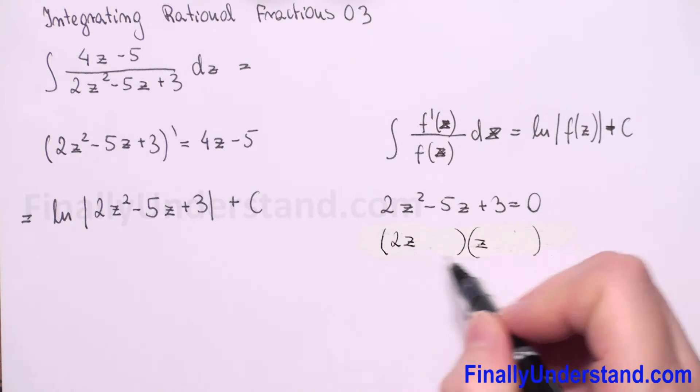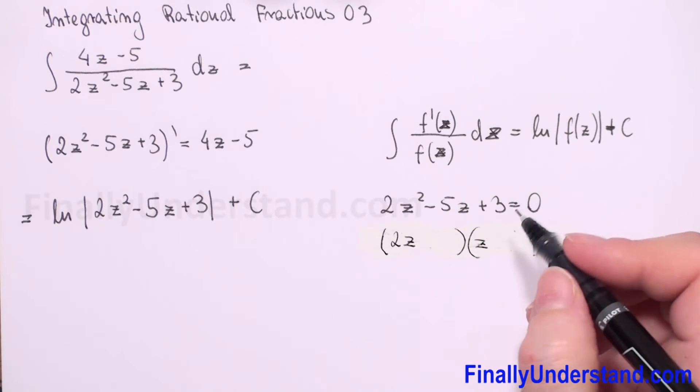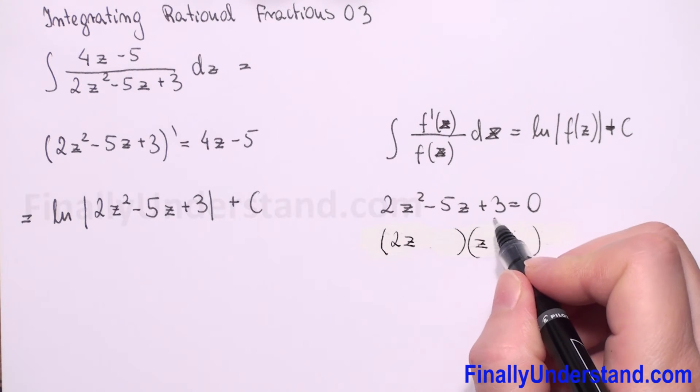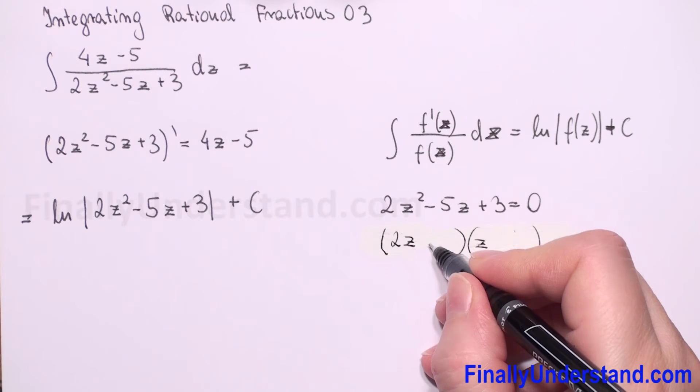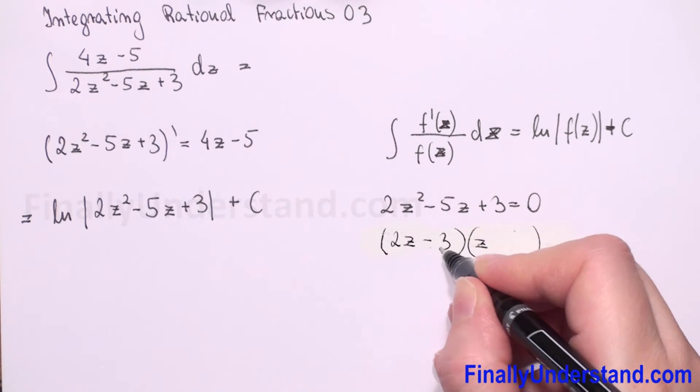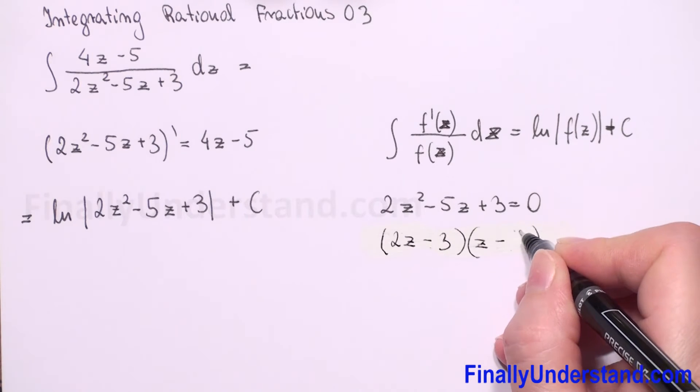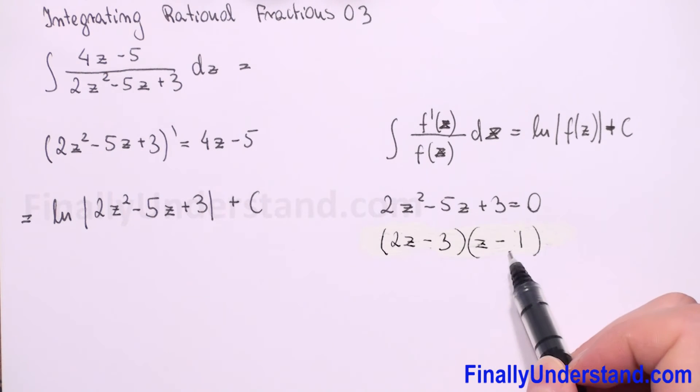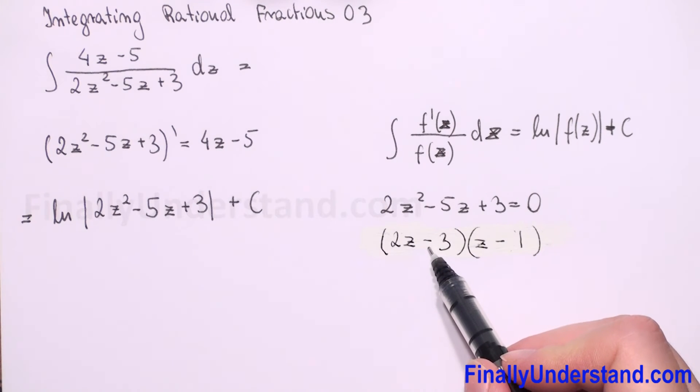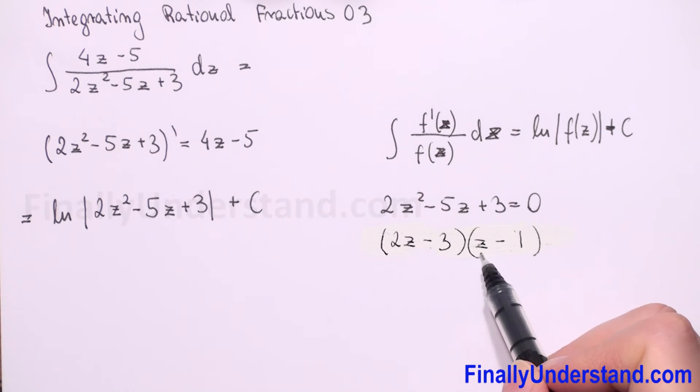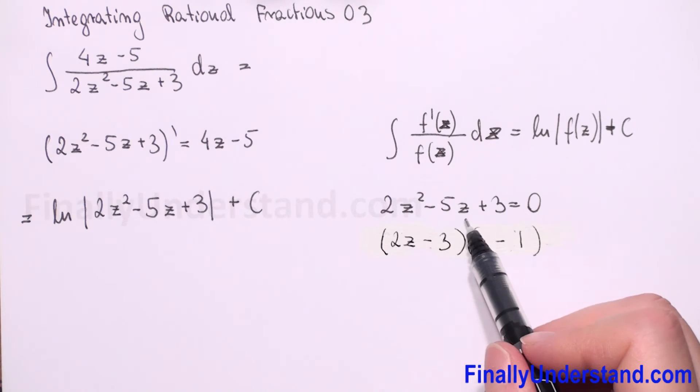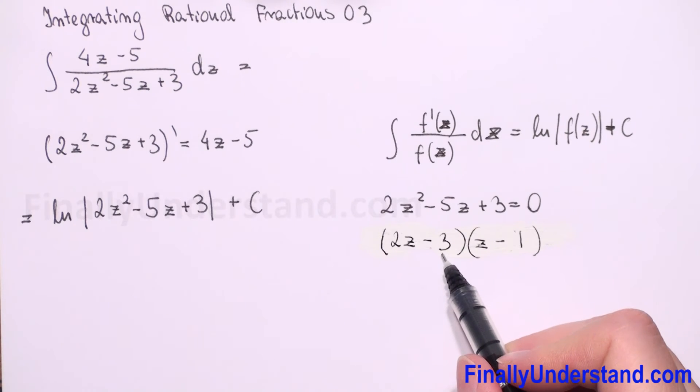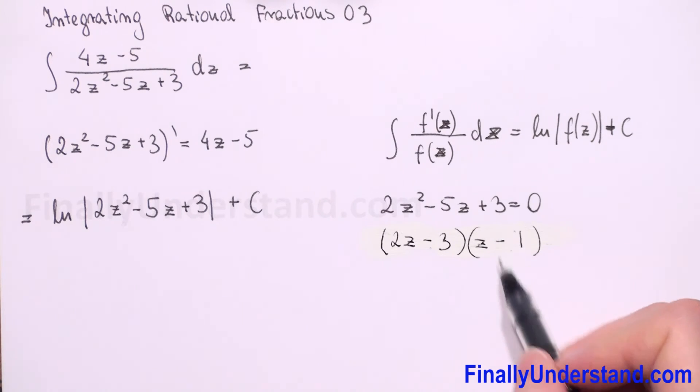So it will be 2z times z, which gives 2z squared. And we need to get positive 3 and negative 5 before z, so we need to put minus 3 minus 1 because 2z times negative 1 give us negative 2z and we have negative 3 times z will be negative 3z. So negative 2z and negative 3z give me negative 5z and negative 3 times negative 1 is positive 3.